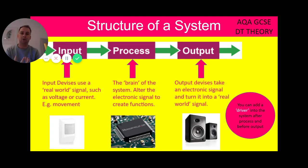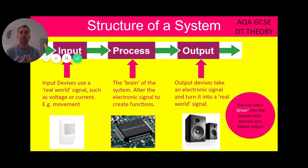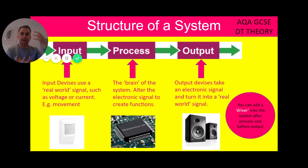We then move to output. Output devices take an electric or electronic signal — i.e. the process — and they turn it into a real world signal. So we start with a real world signal, put it into a process, and we end up with a real world signal. Carrying on with that example, we walk past the motion sensor linked to our alarm. The process section alters that movement and creates a function, and the output in this case would be an alarm — a sound.